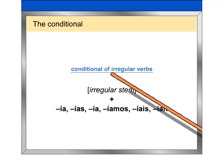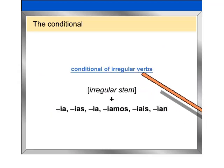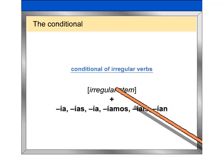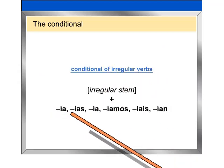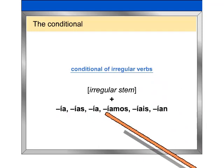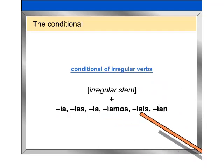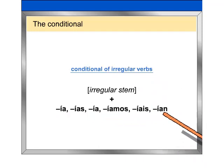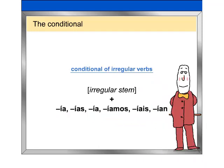For irregular verbs, add the conditional endings to the irregular stems. The irregular stems are the same as the future irregular stems.